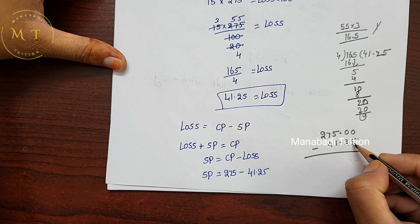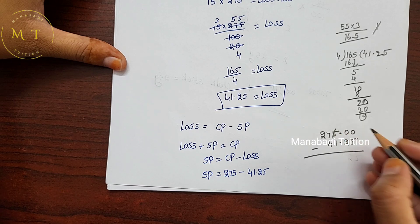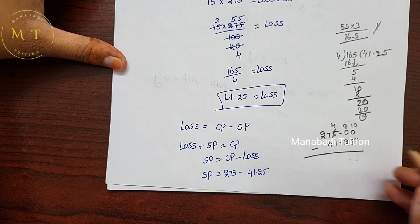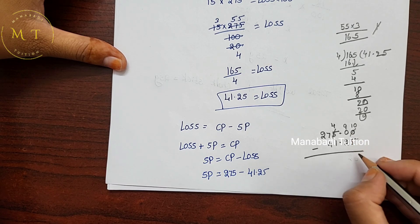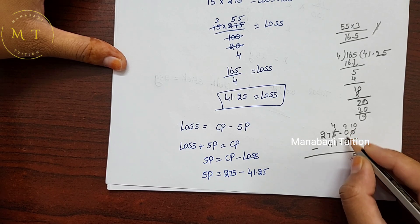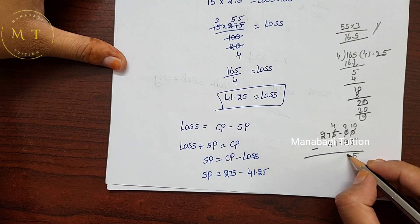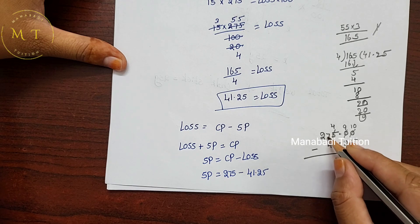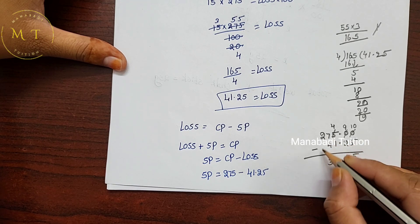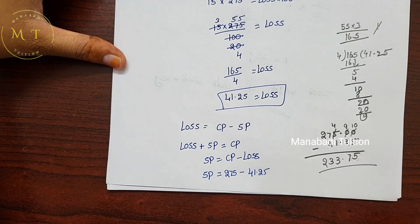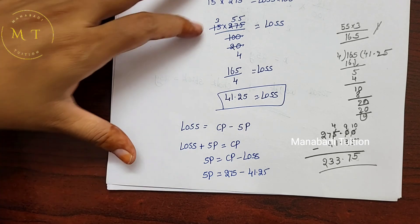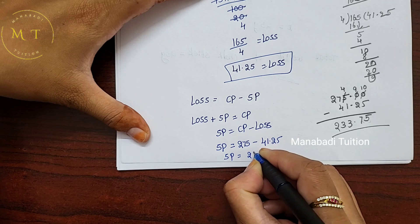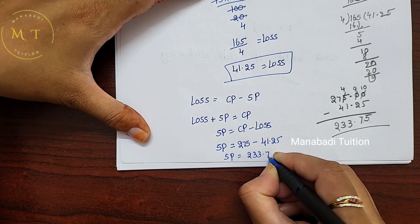Doing the subtraction: 275 minus 41.25. Subtraction: 0 minus 5, borrow — 10 minus 5 is 5; 9 minus 2 is 7; 4 minus 1 is 3; 7 minus 4 is 3; bring down 2. Total: 233.75. So selling price equals 233.75 rupees.